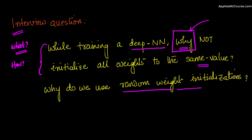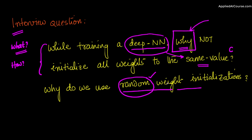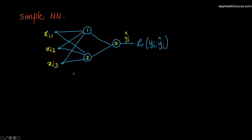This question has been covered in the course videos, but I'm repeating it here. Why don't we initialize all the weights in a deep neural network to the same value, say a constant C? Why do we do random weight initialization where all the weights are initialized randomly and differently from one another? You can easily answer this if you understand back propagation and how deep neural networks work.